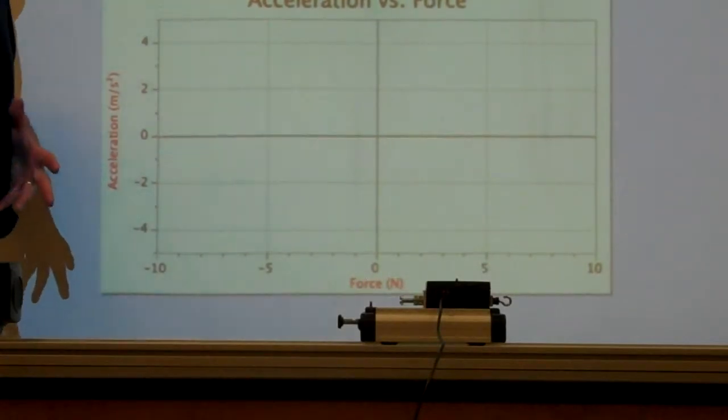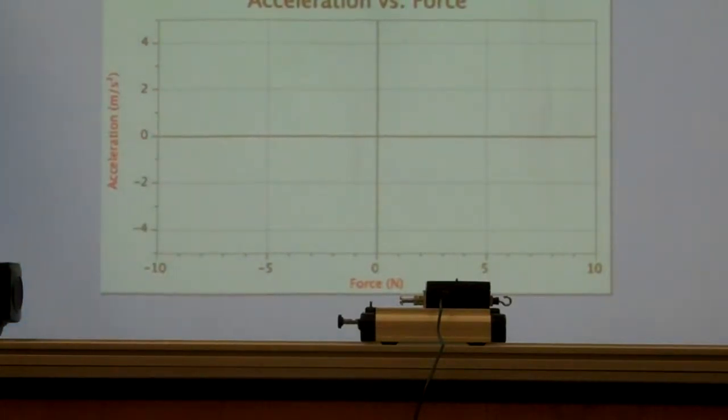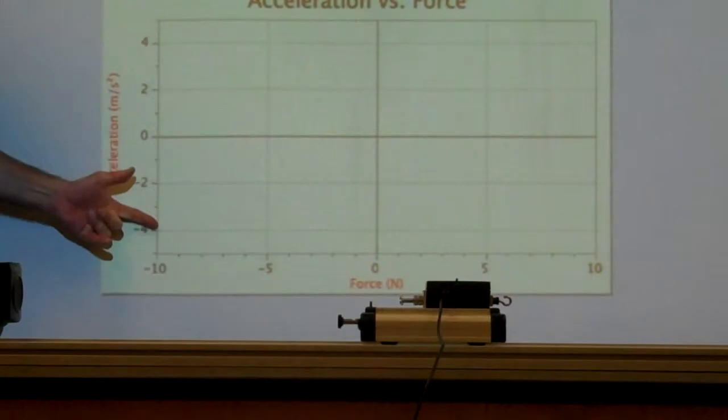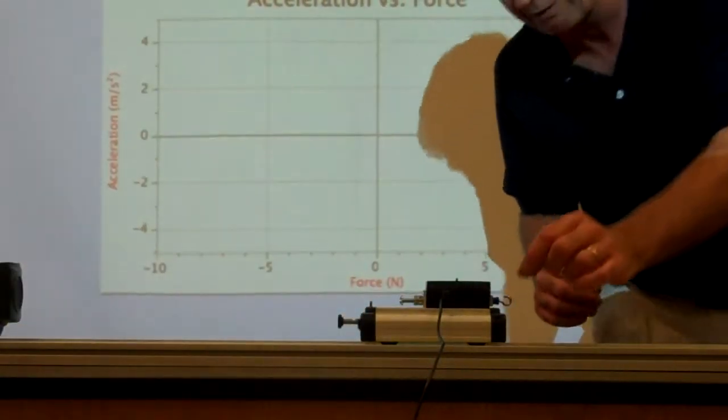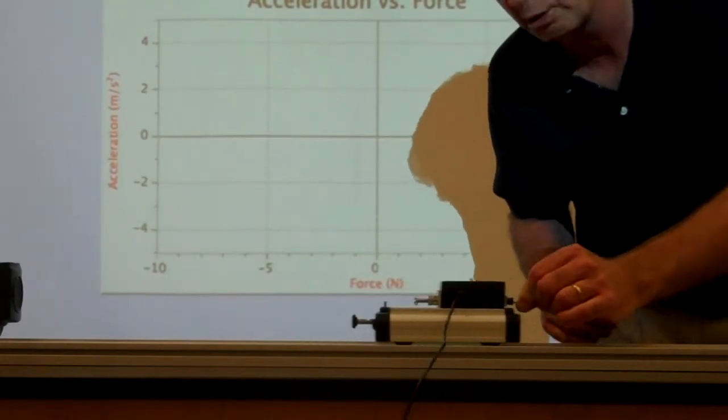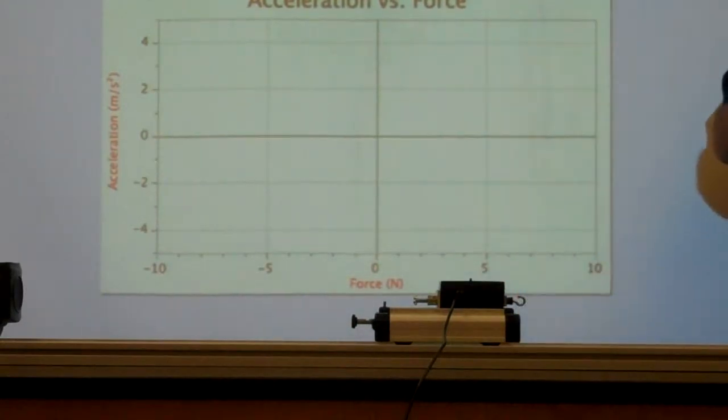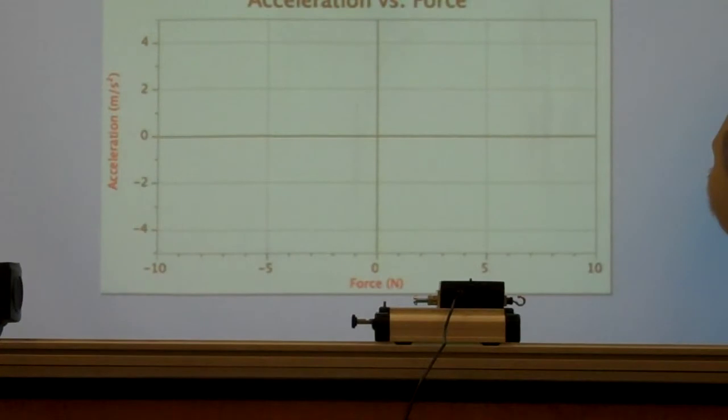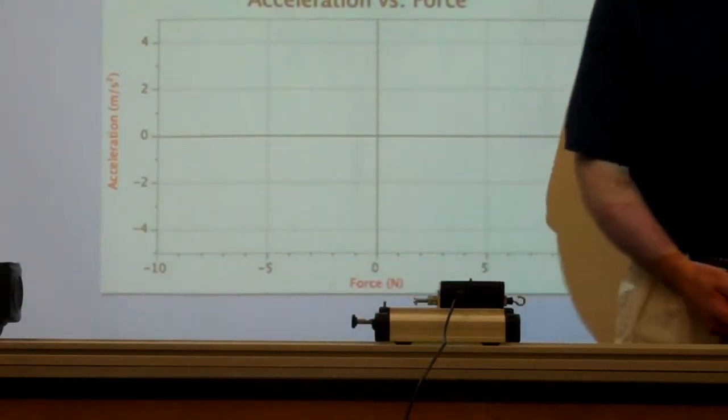To determine information about the acceleration of the cart, I have a motion detector right here that's going to detect the motion of the cart and feed information to my computer, and it's going to plot acceleration along the vertical axis of my graph. And then for the force, I have a little force sensor on the cart. As I push and pull upon that force sensor, the sensor senses the amount of force and it's going to plot that along the horizontal axis. And then finally, I have a mass balance that we can use to mass the cart.